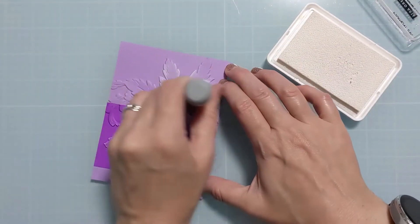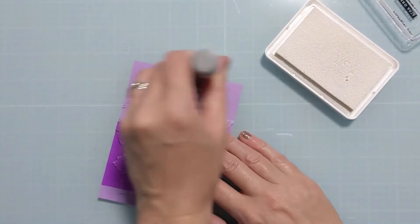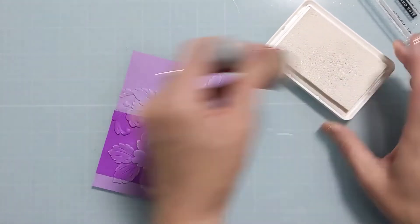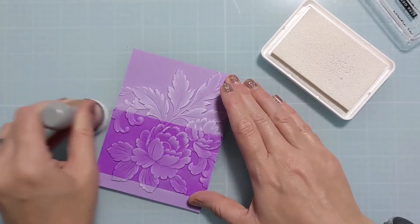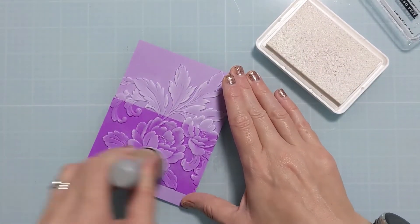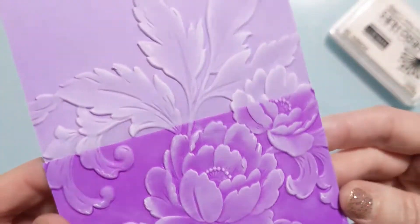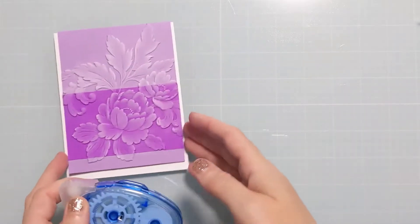Another option you could do if you have a white core cardstock like the fuchsia color is actually take a light sanding to the top and then it'll kind of take the top layer of paper off where it's really raised and then you'll get that white core. So that's another way to kind of create this fun, interesting look to kind of highlight the design.